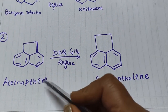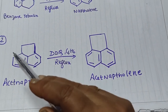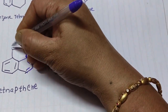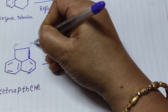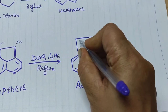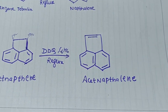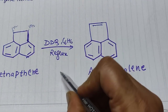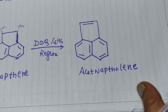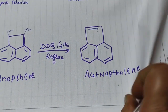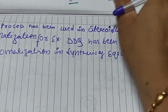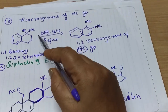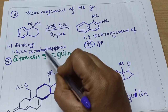The second reaction example involves the acenaphthylene structure. If we remove hydrogens from the CH2 and CH2 positions, a double bond forms at that position, giving the acenaphthylene structure. The same solvent benzene is used and the reaction is refluxed.